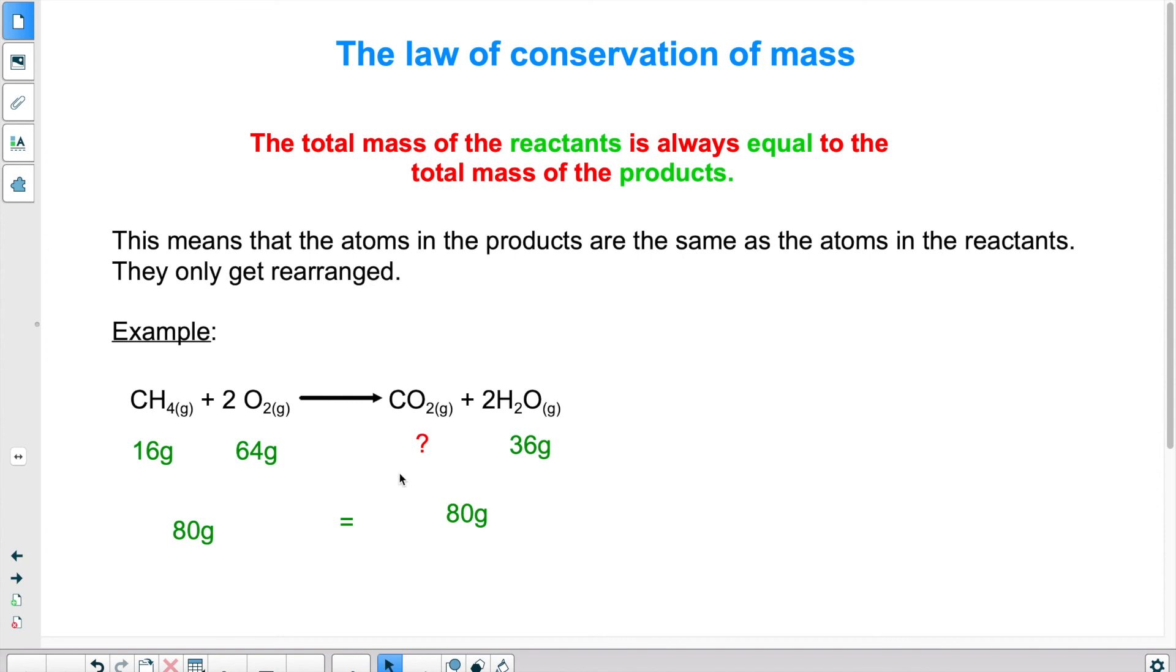So that is the law of conservation of mass or matter. The amount of particles on this side, and therefore their total mass, has to be equal to the number of particles on this side, and therefore their total mass. You can see it here, 80 grams is equal to 80 grams. So that's the law of conservation of mass or matter.